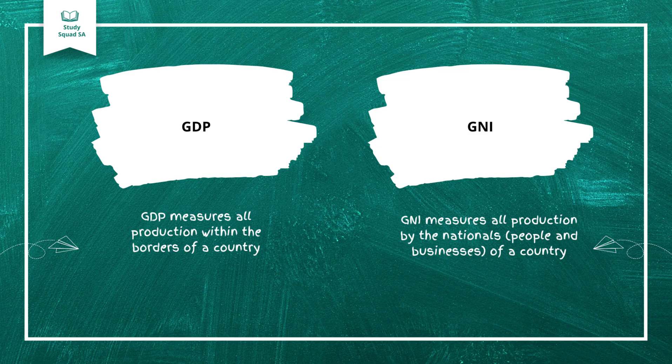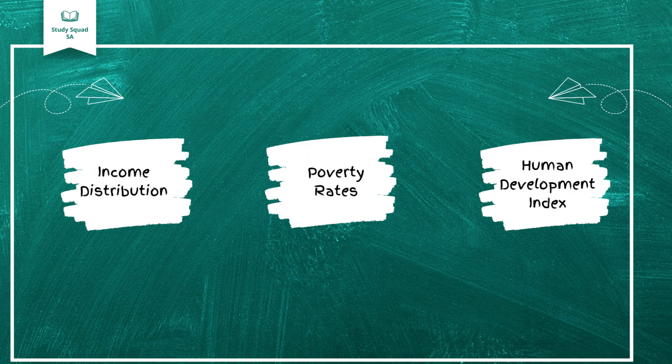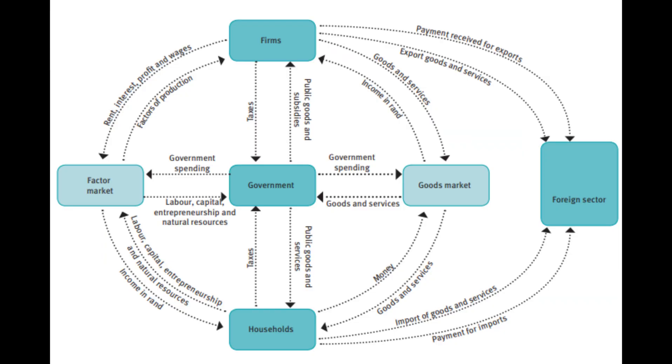Both GDP and GNI are important, but they tell us different things about an economy. Neither tells us everything — a country might have a high GDP but if most of the wealth is concentrated in the hands of a few, the average person might still struggle. This is why economists also look at measures like income distribution, poverty rates, and the Human Development Index to get a fuller picture of economic health.